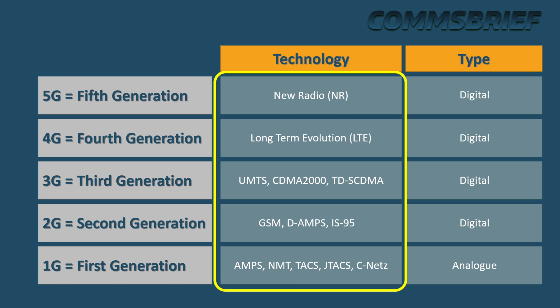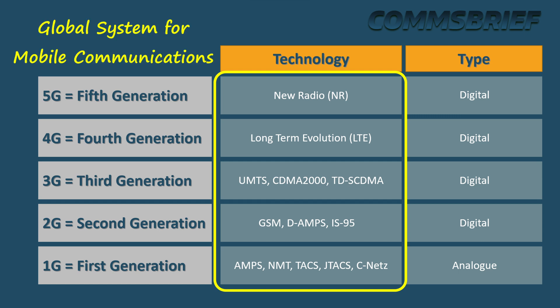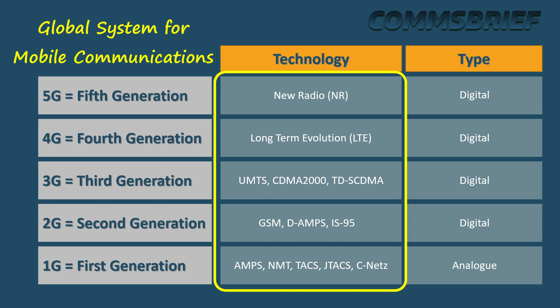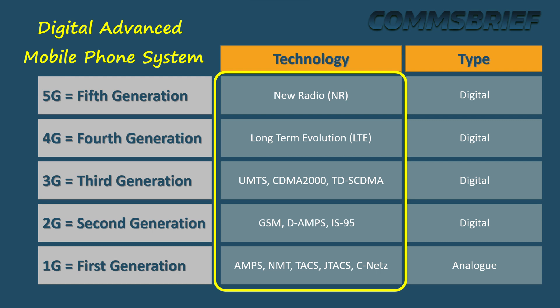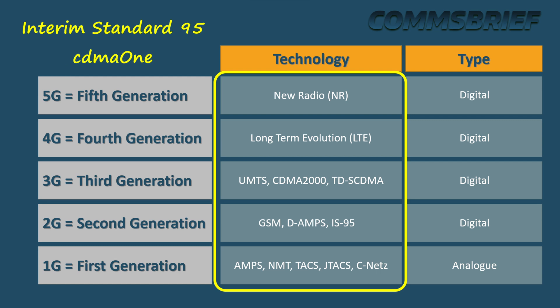But the early 1990s is when things started to change big time. This is when the second generation mobile networks marked the beginning of the digital era of mobile communications. The most prominent technologies in 2G are GSM (Global System for Mobile Communications), DAMPS (Digital Advanced Mobile Phone System), and IS-95 (Interim Standard 1995). IS-95 is the CDMA network, which was very popular in the U.S., and commercially it was called CDMA One.